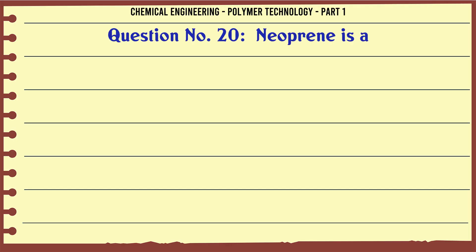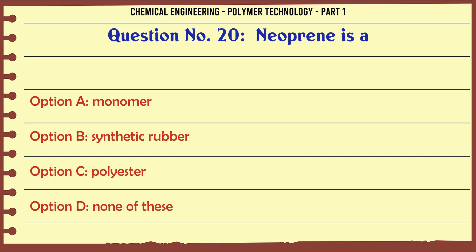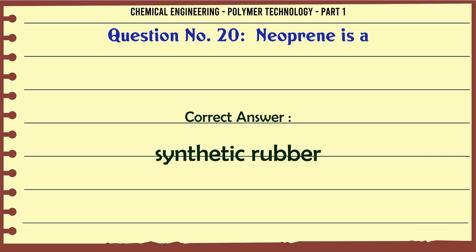Neoprene is: A. A monomer, B. Synthetic rubber, C. Polyester, D. None of these. The correct answer is Synthetic rubber.